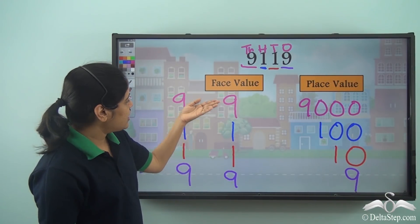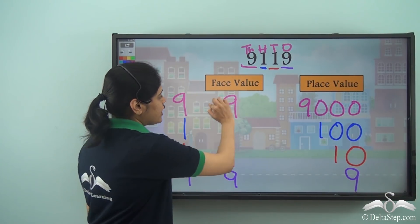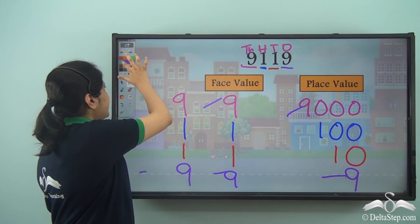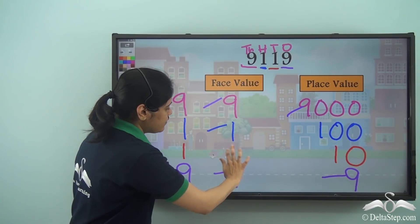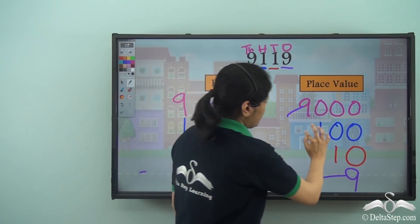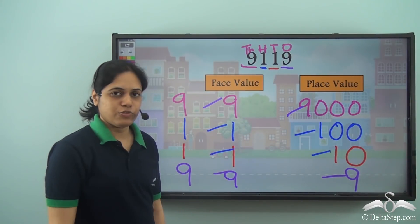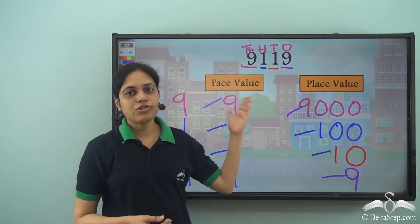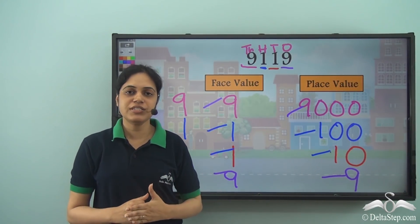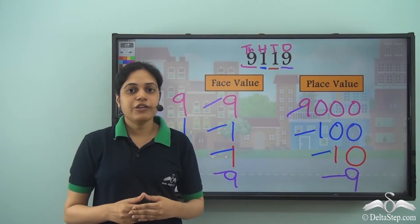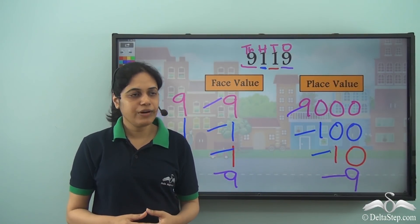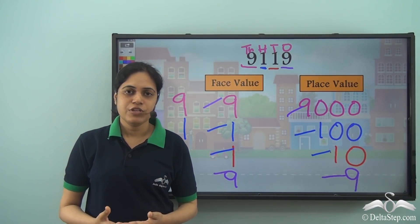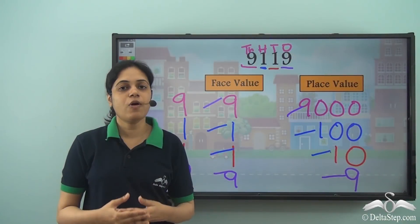We see that there are 2 nines — their face values are the same but the place values are different. And again there are 2 ones with the same face values but different place values. Place value depends on where the digit is placed in the number, and face value is the digit itself. Do practice this more and more till you get them all correct.